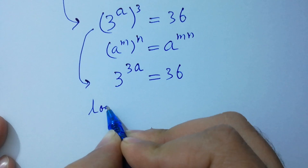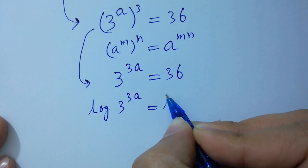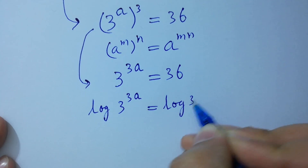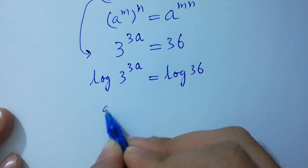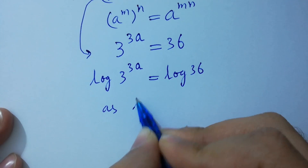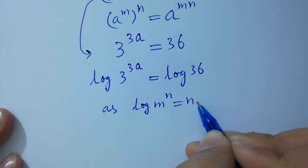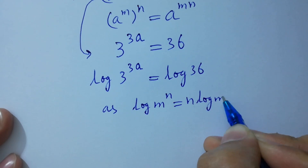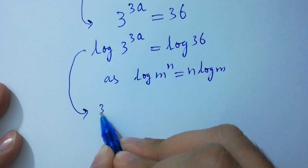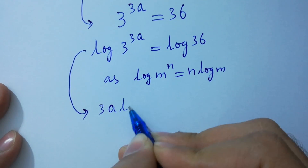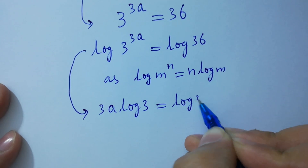Log of 3 to the power 3a equals log 36. As log m to the power n equals n log m, we get 3a log 3 equal to log 36.